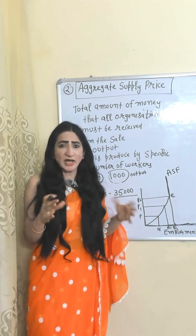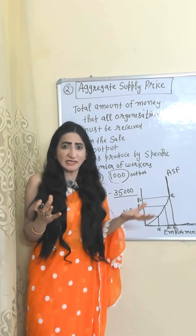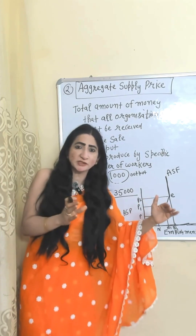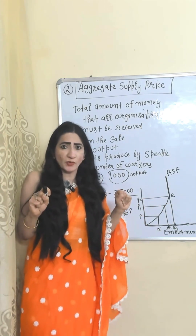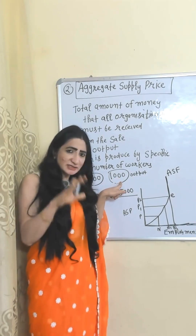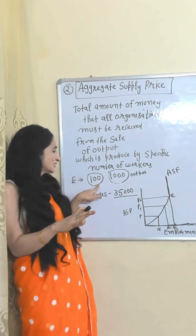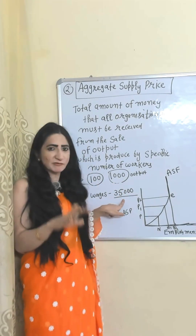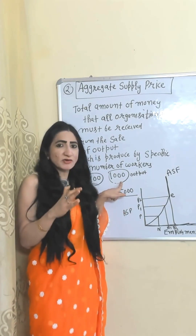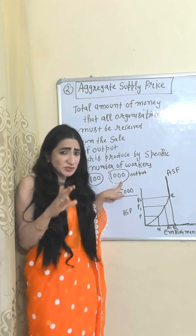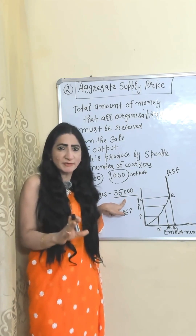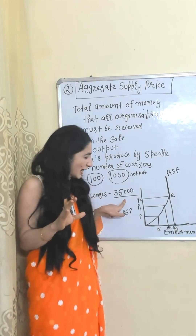Aggregate supply price is the total amount of money which businesses must receive from the sale of output produced by a specific number of workers. For example, 1,000 employees produce 1,000 units, and the wage cost of these employees equals 35,000 rupees. That is why from the sale of 1,000 units, businesses must receive 35,000 rupees. This 35,000 rupees will be called the aggregate supply price.